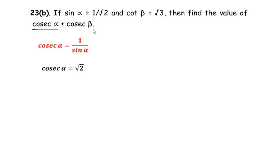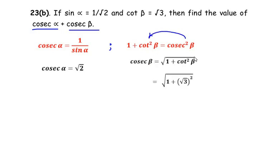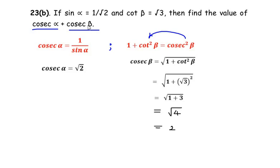Now let us focus on cosec beta. There is a trigonometric identity that relates cosec beta with cot beta, which is 1 plus cot squared beta equals cosec squared beta. Since we have to find cosec beta, let us take the square root, giving cosec beta equals square root of 1 plus cot squared beta. Since cot beta is given as root 3, we substitute its value: square root of 1 plus the square of root 3, which simplifies to square root of 1 plus 3, giving square root of 4, which equals 2. So cosec beta equals 2.